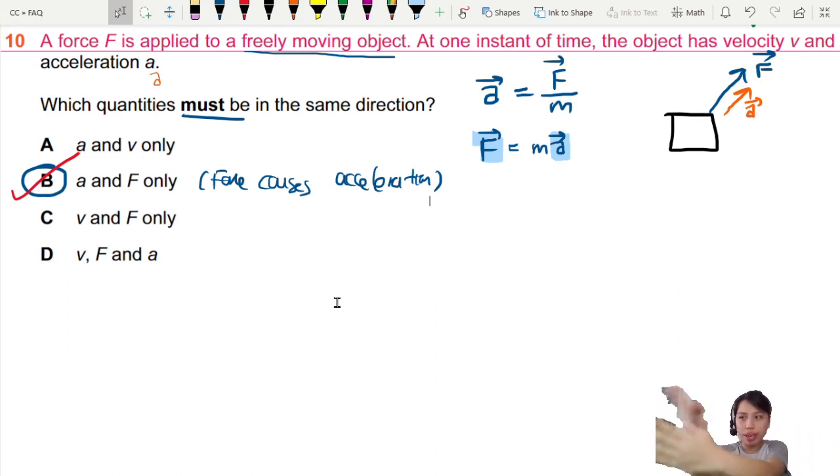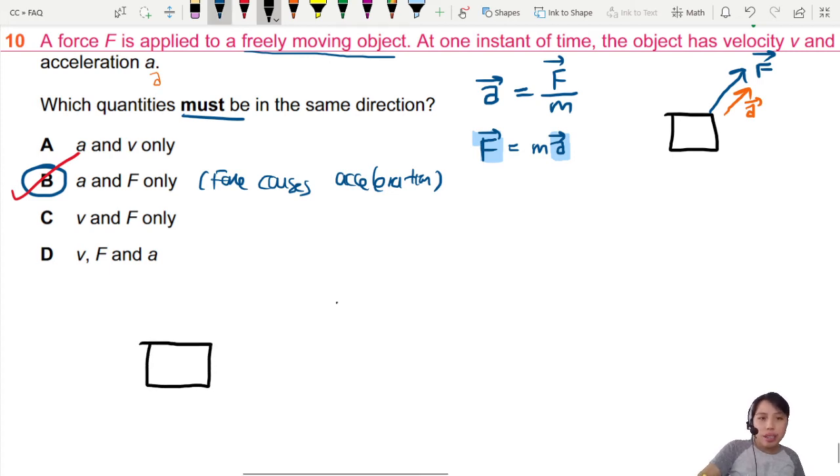Force this way, accelerate this way. Force that way, accelerate that way. What about velocity? Let's say you have an object sliding along a smooth surface, and it is moving at a certain velocity this way. What happens if I apply a certain force to this object this way?